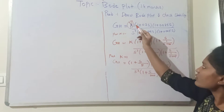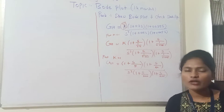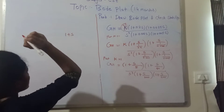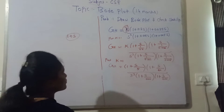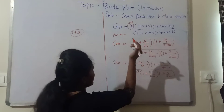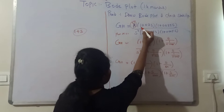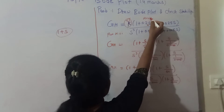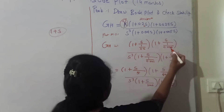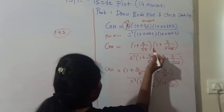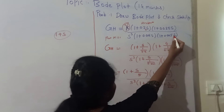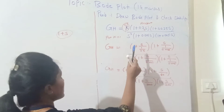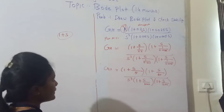So putting k equal to 1 removes k. To draw the magnitude plot, we need to convert each factor into the 1+s form. The conversion is done by taking the reciprocal of the coefficient of s. So 1/0.02 gives 50, 1/0.025 gives 40, 1/0.001 gives 1000, and 1/0.005 gives 200. After conversion, the equation becomes GH equals (1 + s/5)(1 + s/40) upon s cube (1 + s/1000)(1 + s/200). Then we substitute s equal to jw to get imaginary and real poles.